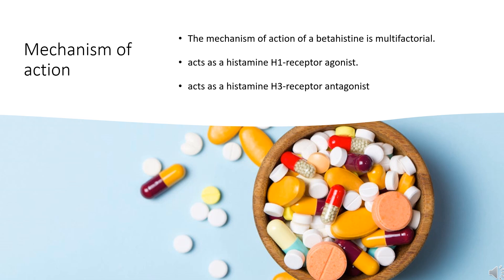The mechanism of action of beta-histine is multifactorial. Meniere's disease is thought to result from a disruption of endolymphatic fluid homeostasis in the ear. Beta-histine mainly acts as a histamine H1 receptor agonist. The stimulation of H1 receptors in the inner ear causes a vasodilatory effect, leading to increased permeability of blood vessels and a reduction in endolymphatic pressure. This action prevents the rupture of the labyrinth, which can contribute to the hearing loss associated with Meniere's disease.